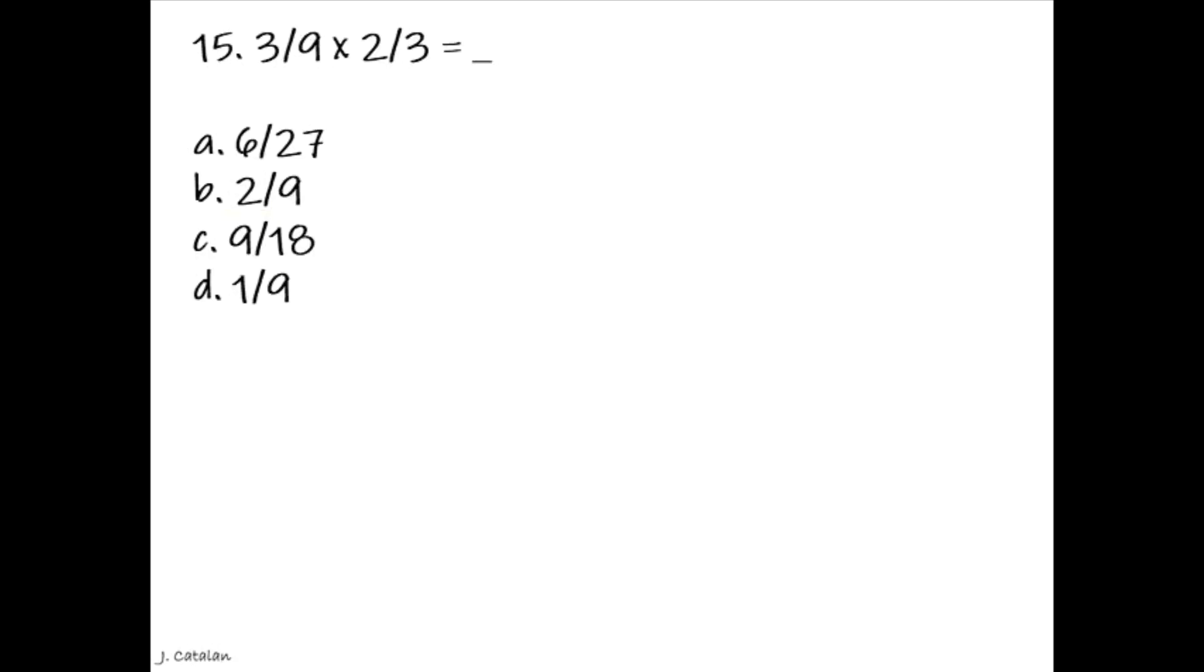Question. 3 ninths times 2 thirds is equal to underscore. Answer. 6 twenty-sevenths.